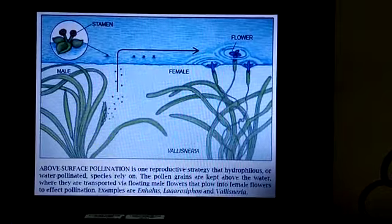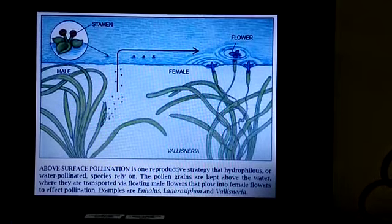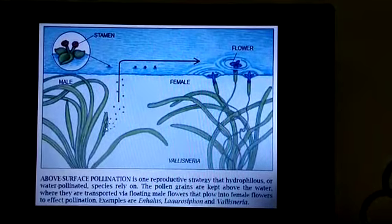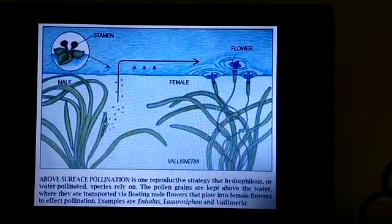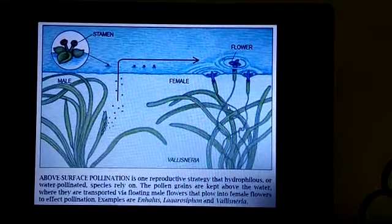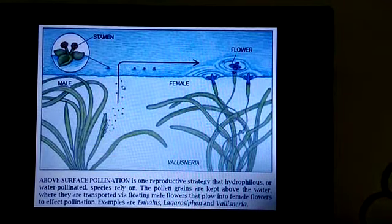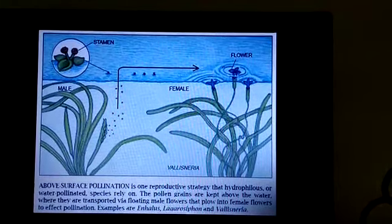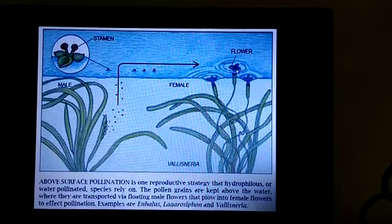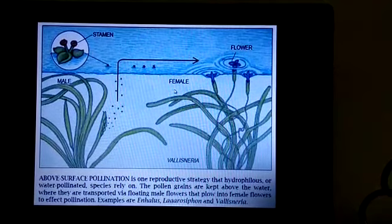As shown in the picture, pollen grains are produced in the male flower, and when they mature, they are released and float on the surface of water. The female plant has a stigma present on the water surface. When the floating pollen grains reach the feathery and sticky stigma, they stick to it and fertilization occurs. This same process occurs in all water plants for pollination.